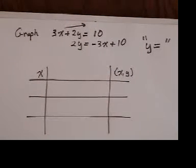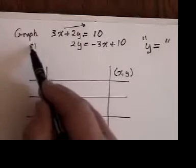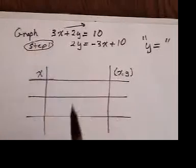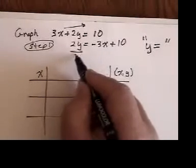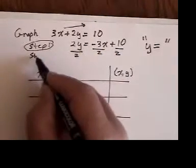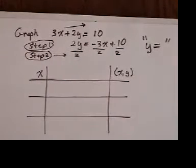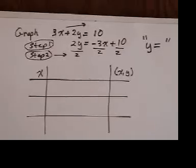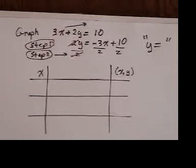The second step is whatever number is in front of the letter y, divide by it. So I'm going to divide this by 2, this by 2, and this by 2. Whatever number is in front of the letter y, you divide by it. And at that point, this 2 and this 2 will cancel, and you're going to be left with y equals.